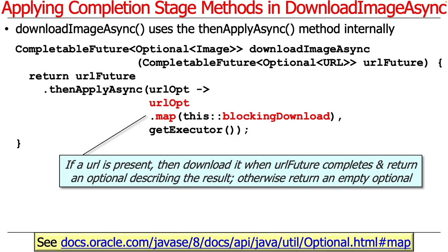This is a really good example of using Optionals. What we do is: if the URL in this Optional is valid — in other words, if it was not cached previously — then go ahead and do a blocking download on it. URLOpt is the type that comes out of thenApplyAsync when URLFuture completes, and we use the map method on Optional. The way map works is: if the Optional is empty, map is a no-op; if the Optional is not empty, map applies the method reference passed to it, which is a function in this case.